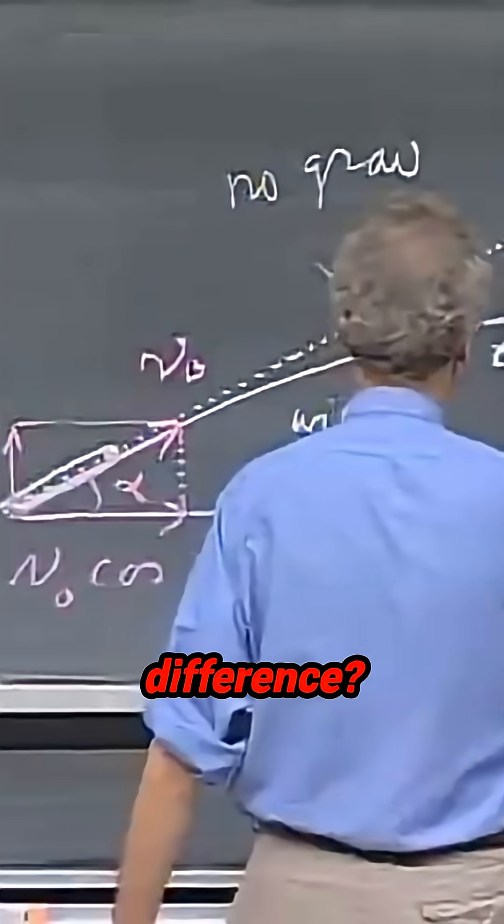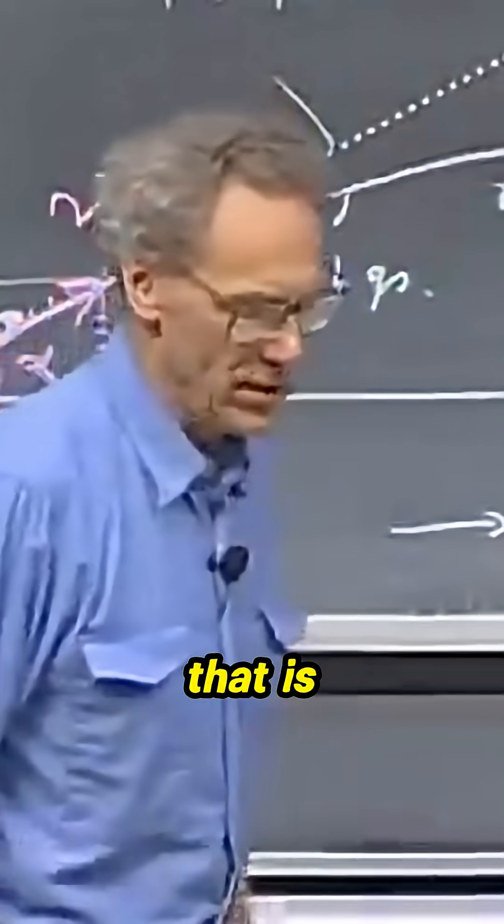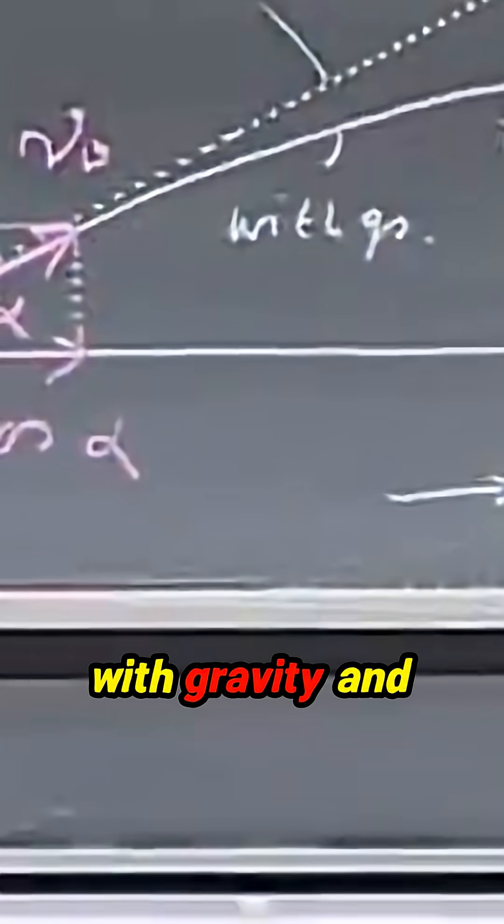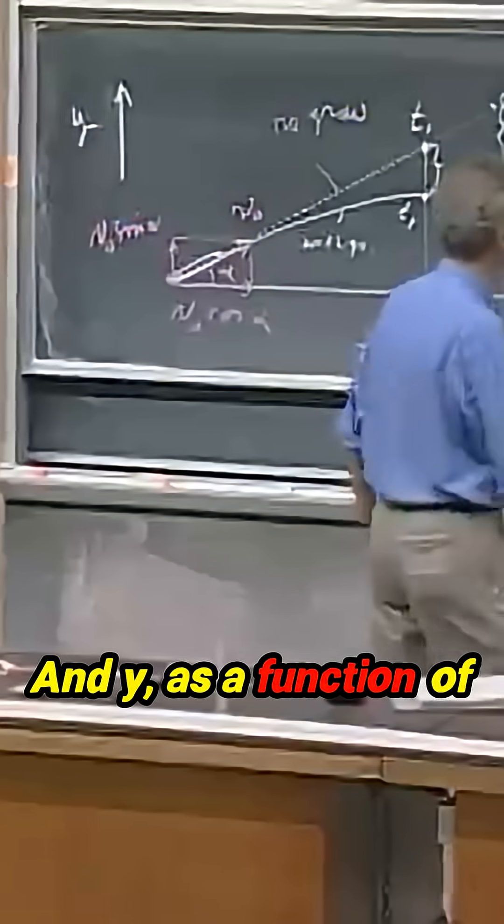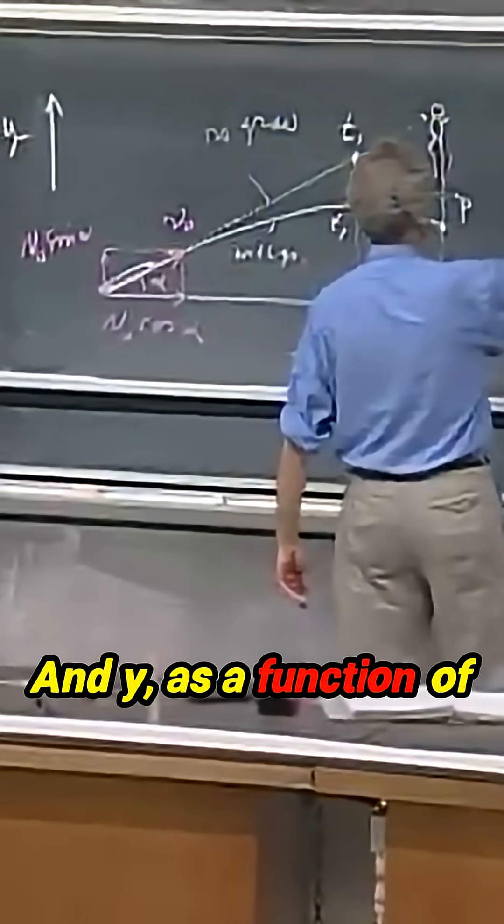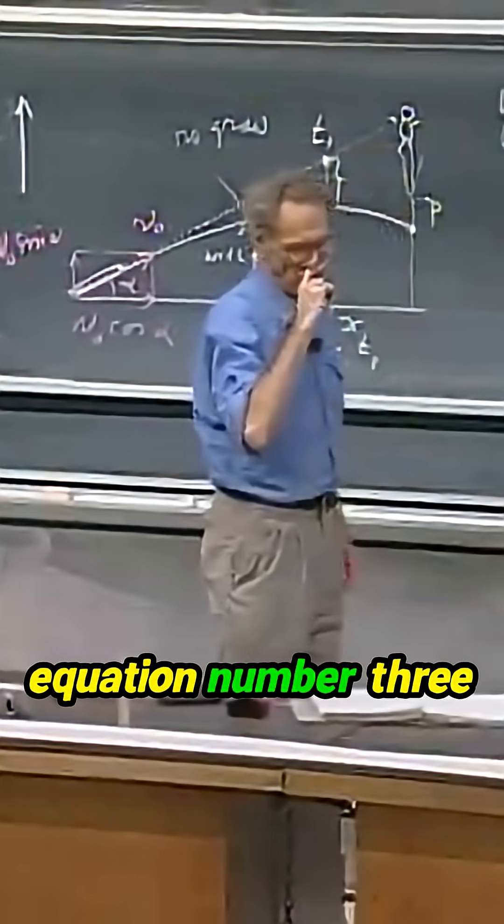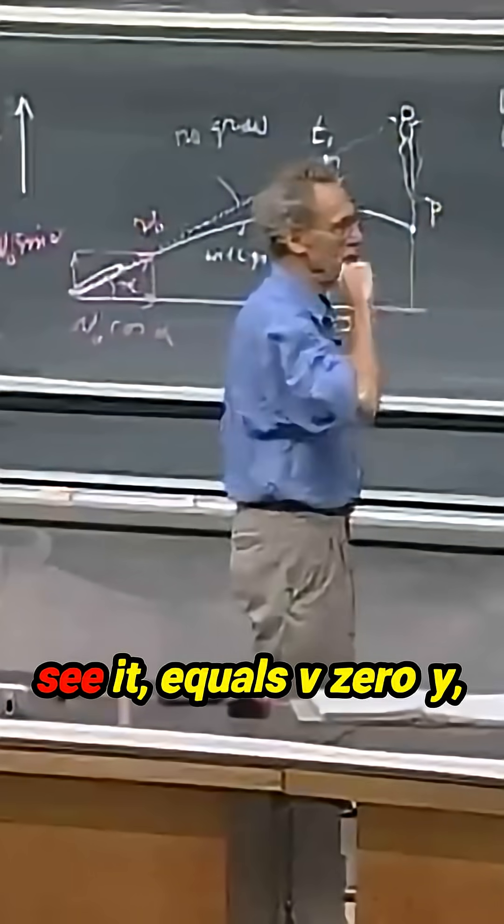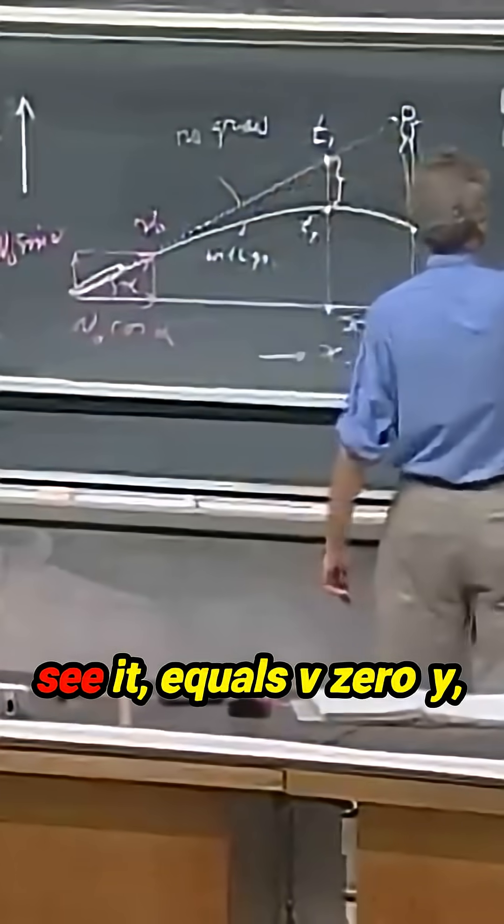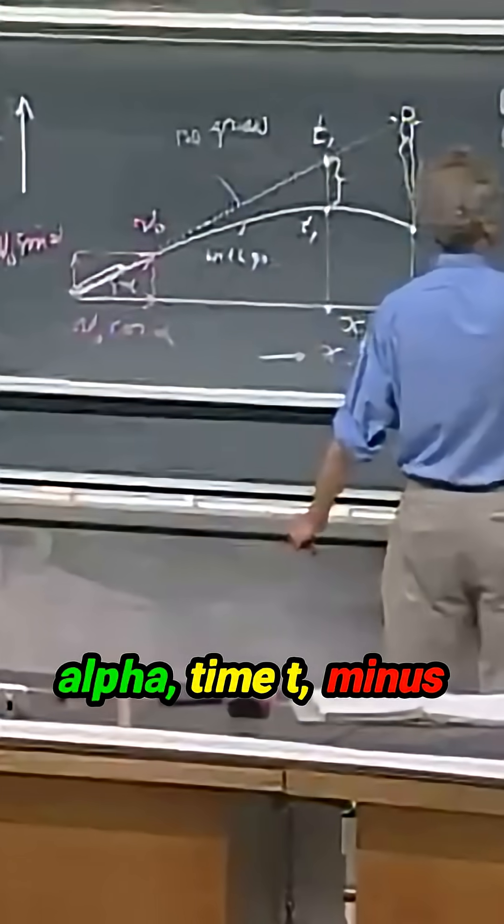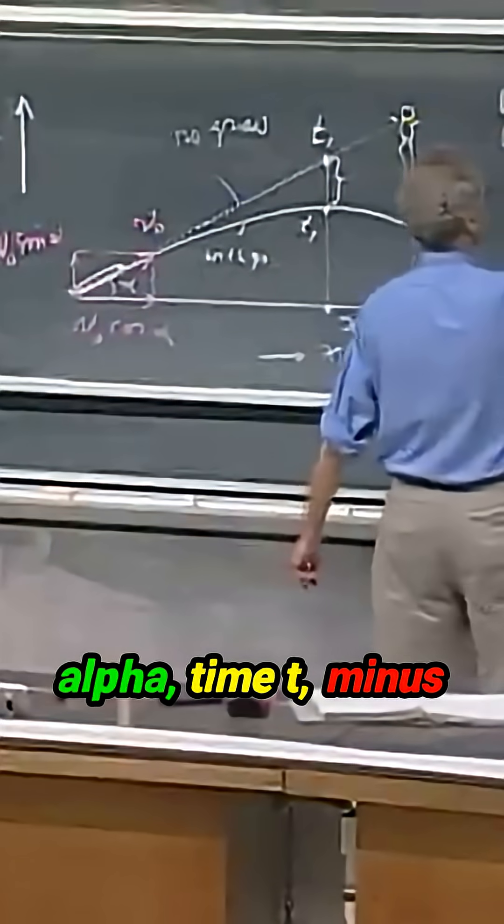What is this difference? Well, that is the difference between the equation with gravity and without gravity. And y, as a function of time, you can look at equation number three there, if you can still see it, equals v zero y, which is v zero sine alpha, times t,